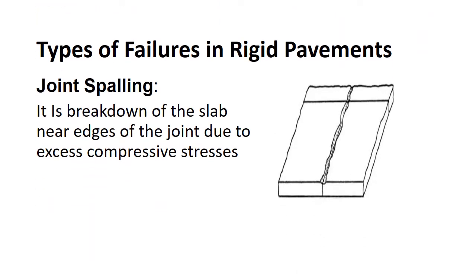Joint spalling is the breakdown of the slab near the edges of the joint due to excess compressive stress. Normally it occurs within 0.5 meters of the joint. The main causes are faulty alignment of incompressible material below the concrete slab.